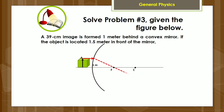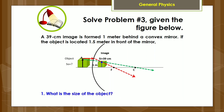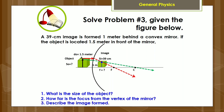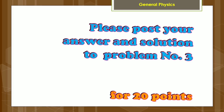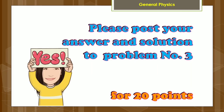For your performance task, solve problem number three. A 39-centimeter image is formed one meter behind a convex mirror. If the object is located 1.5 meters in front of the mirror: number one, what is the size of the object? Number two, how far is the focus from the vertex of the mirror? Number three, describe the image formed. Please post your answers and solution to problem number three to gain 20 points.